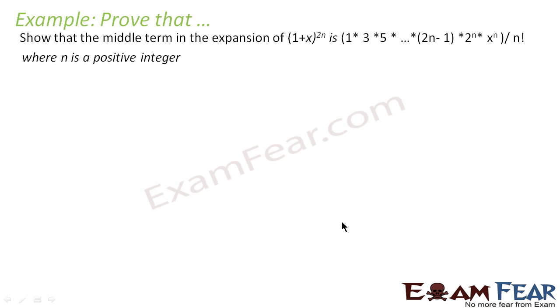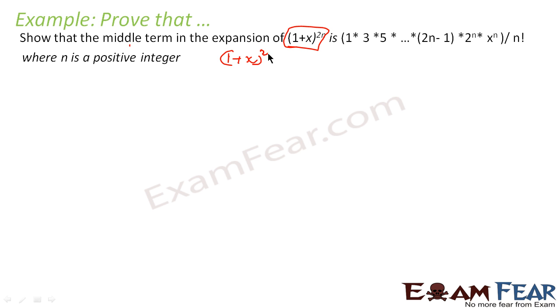Let's take this example. We have to prove that in the expansion of (1 + x)^2n, the middle term equals a specific expression. As we can see, we are working with 1 plus x to the power 2n.